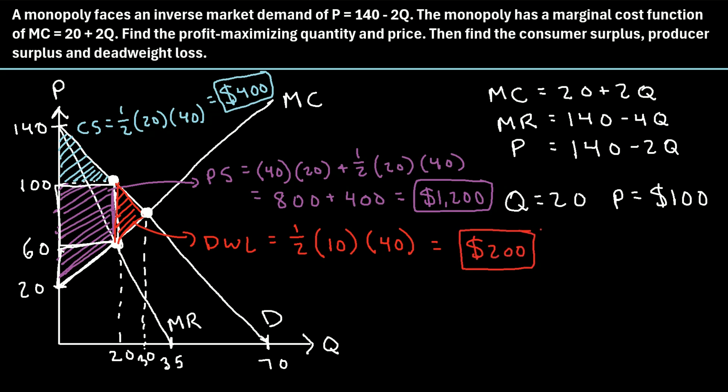That is the process you can use to find consumer surplus, producer surplus, and deadweight loss in a monopoly market.